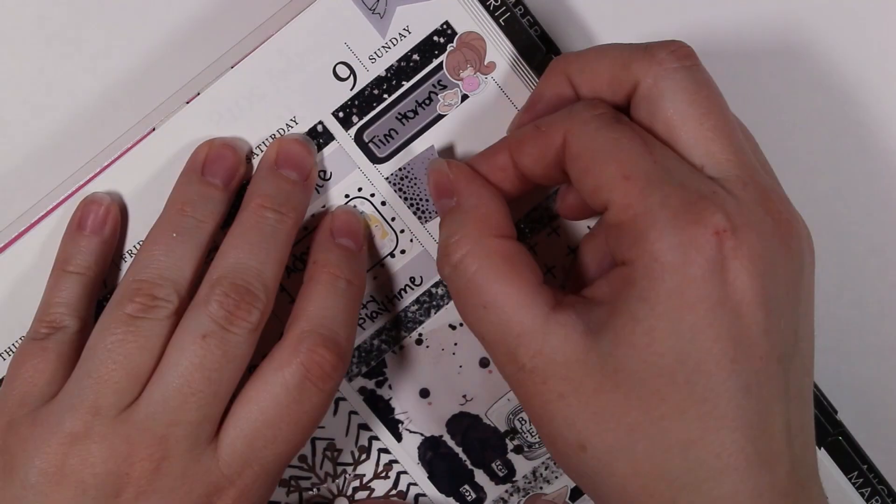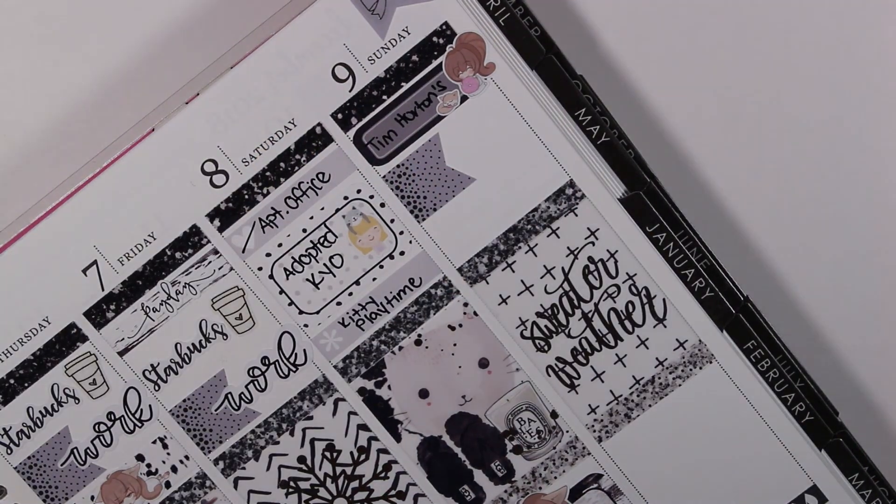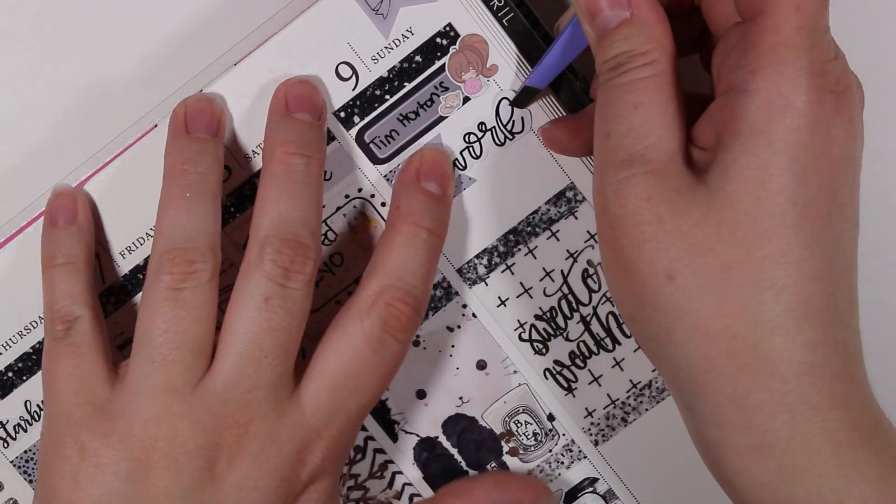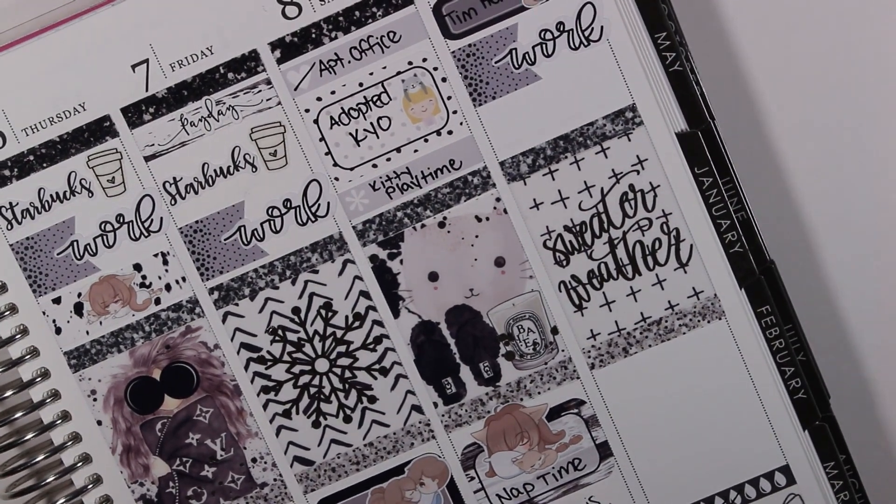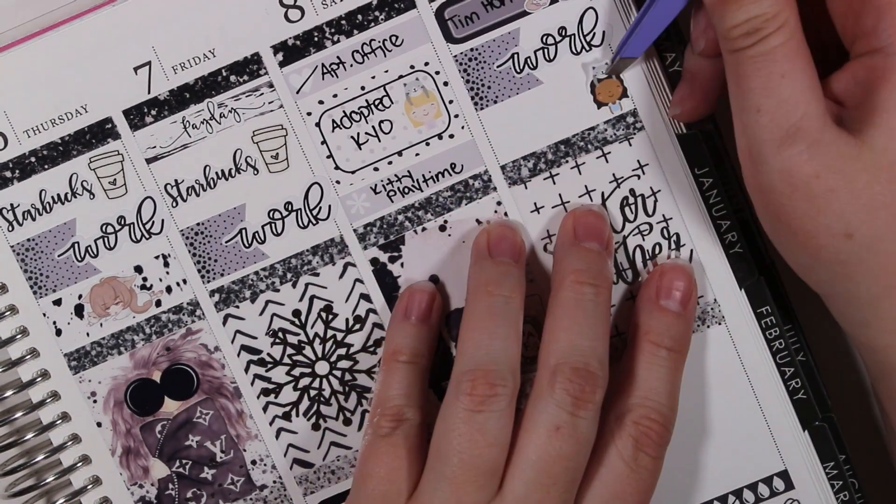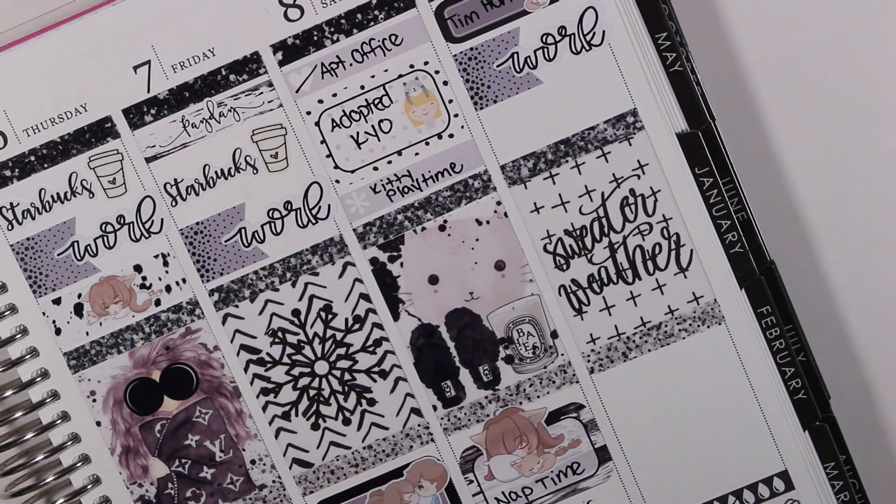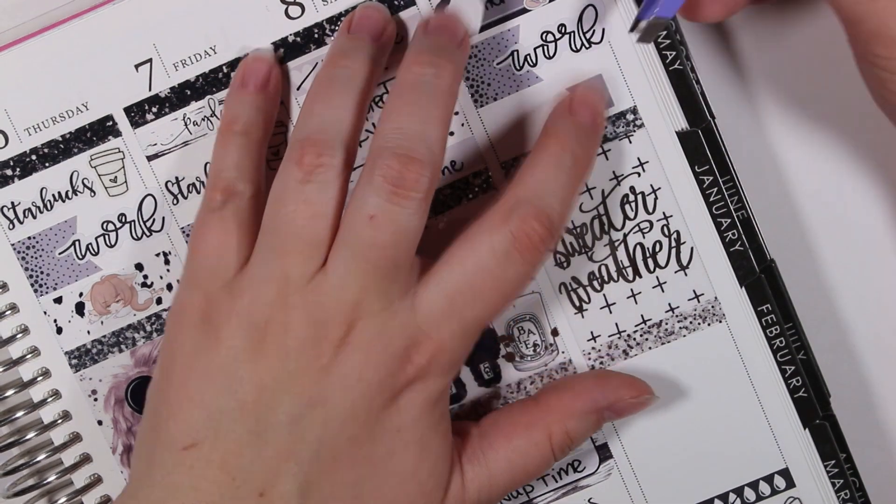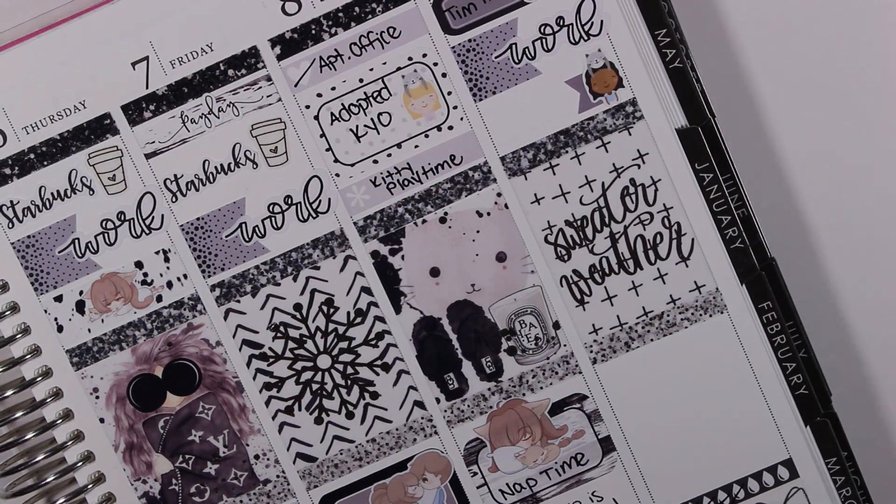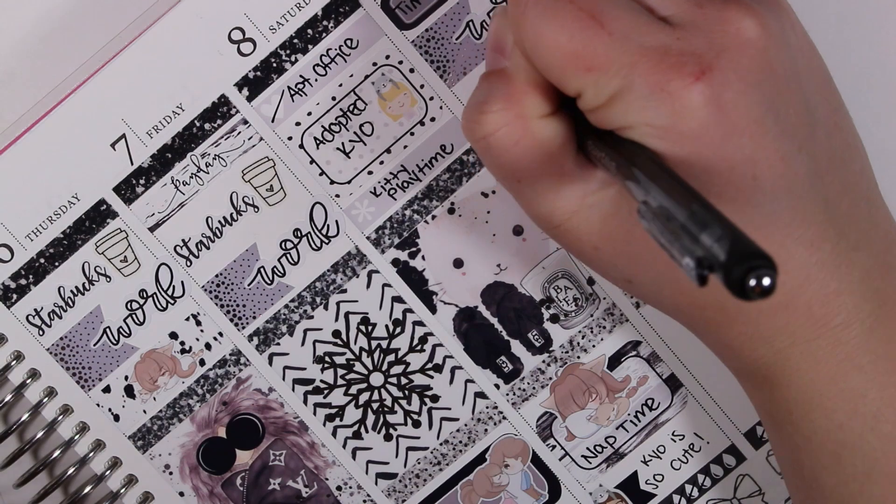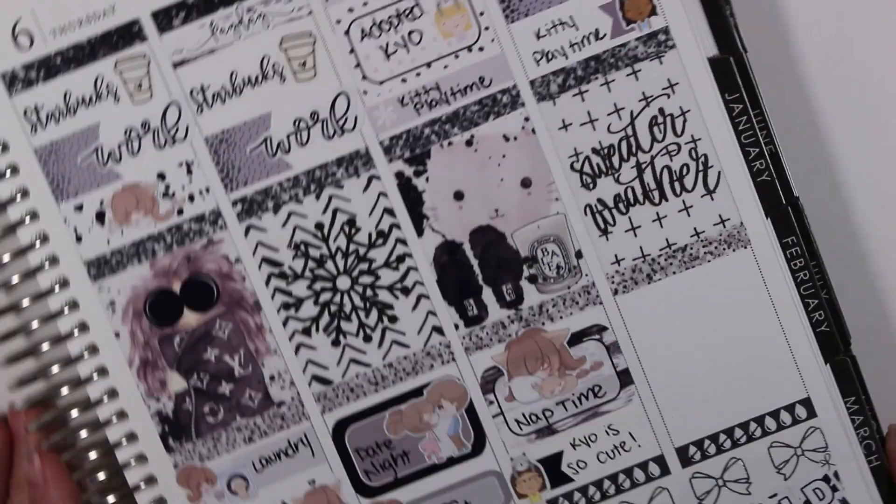And then on Sunday morning I changed it up and I went to Tim Hortons instead because I realized that Starbucks was not going to be open that morning before I had to be at work. And then I marked work as I have been. And then I marked kitty playtime with a flag sticker from the kit and I think that's a Celeste kitty girl or a Celeste girl with a kitty from Scribble Prints Co. to mark kitty playtime.